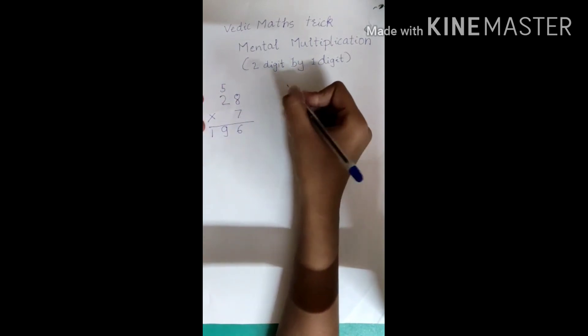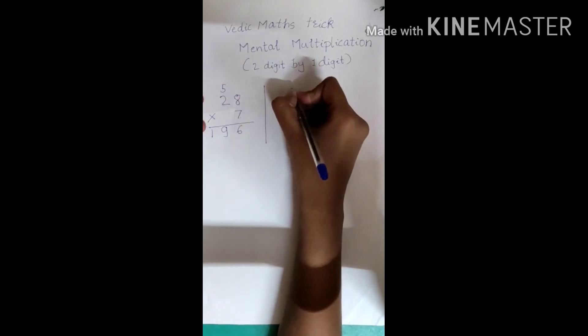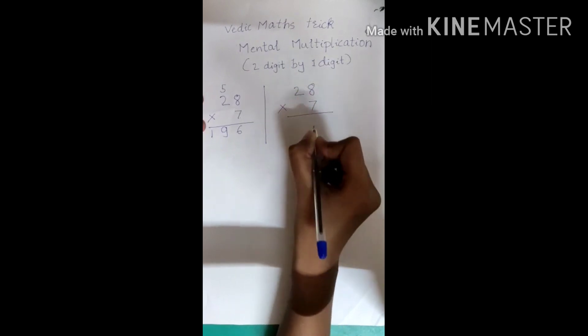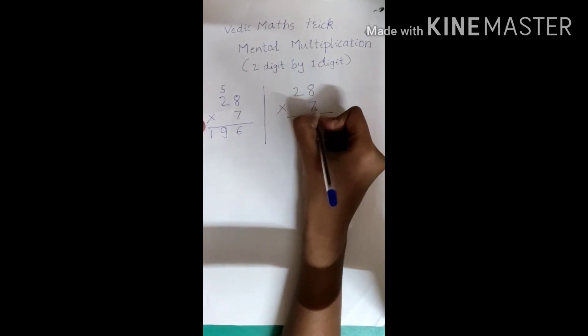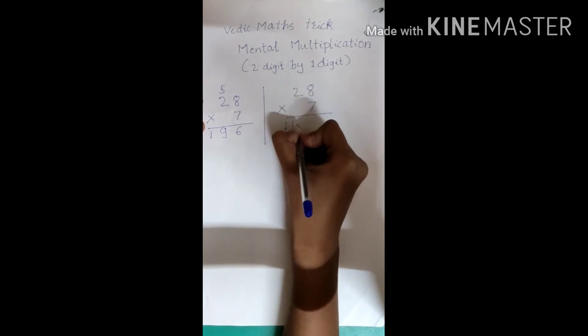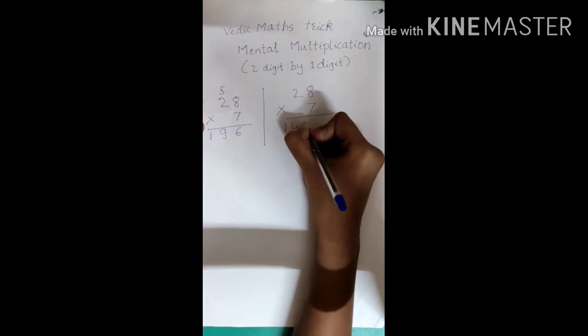So let's do this by Vedic Maths. In this trick, first you have to multiply 7 into 2, it's 14 and put a 0.